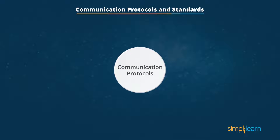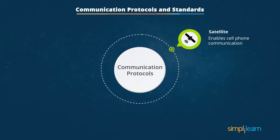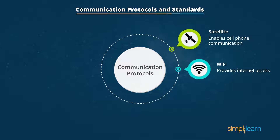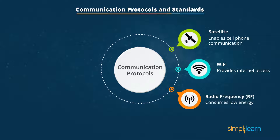Let's understand the various communication protocols available for IoT. The first is satellite, which enables cell phone communication through an antenna situated within 10 to 15 miles, providing a stable and universal connection. The second is Wi-Fi, based on 5 GHz frequencies, providing internet access within a certain range at an affordable cost with well-protected protocols. The third is radio frequency — examples include Zigbee and Z-Wave, which use low-power RF radio, consume low energy, and are relatively simple to configure.